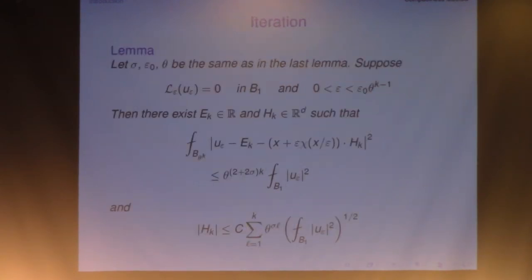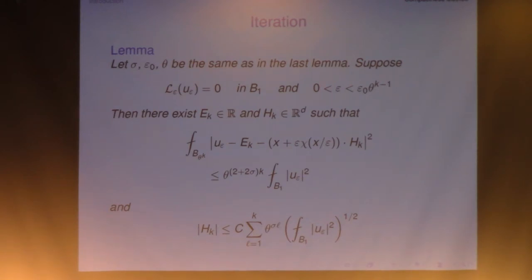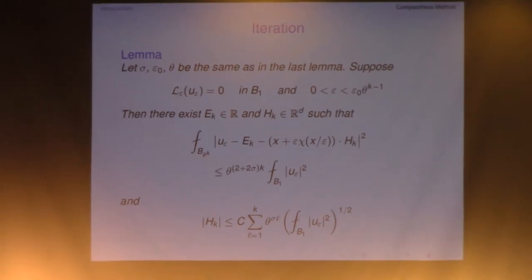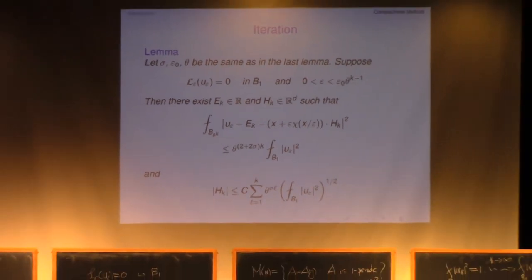But this is not enough. In the second step, we're going to iterate this. In the first step, this is a so-called one-step improvement — you only got a little bit, and that's not going to be enough. In the second step, we're going to simply iterate. This is an induction argument.